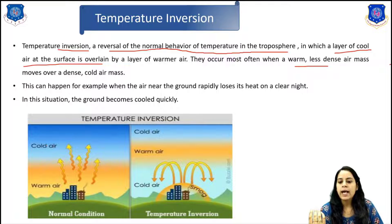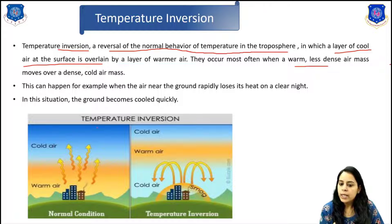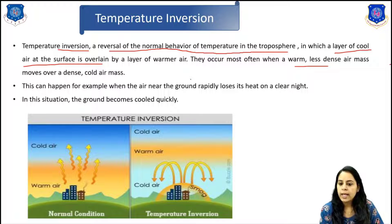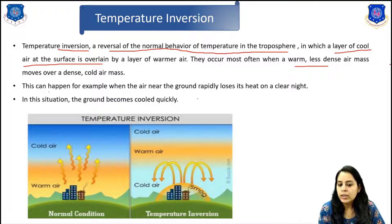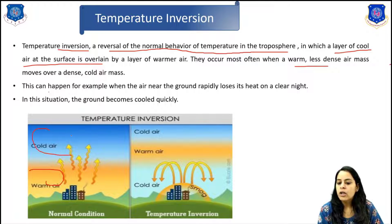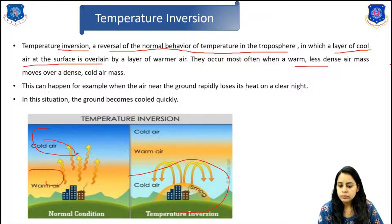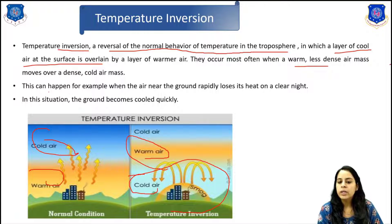Here on screen you can see that a layer of cool air at the surface is overlaid by a layer of warmer air. This occurs when a warm, less dense air mass moves over a dense cool air mass. This can happen, for example, when the air near the ground rapidly loses its heat on a clear night. In the normal condition, warm air is near the ground and cold air is above. Temperature inversion occurs when cold air is near the ground and warm air is up in the atmosphere.